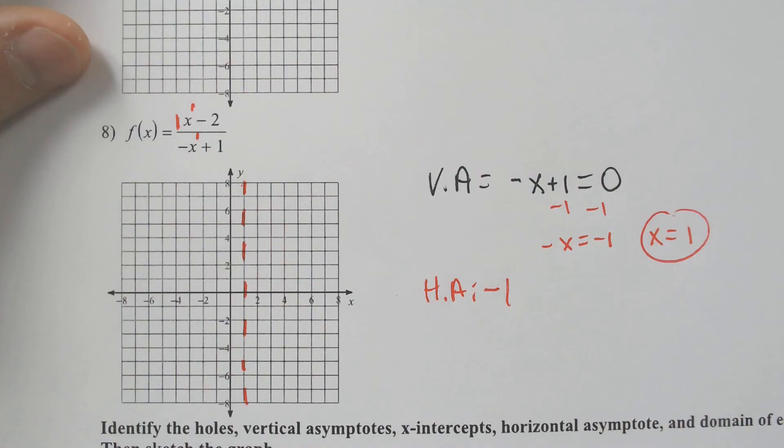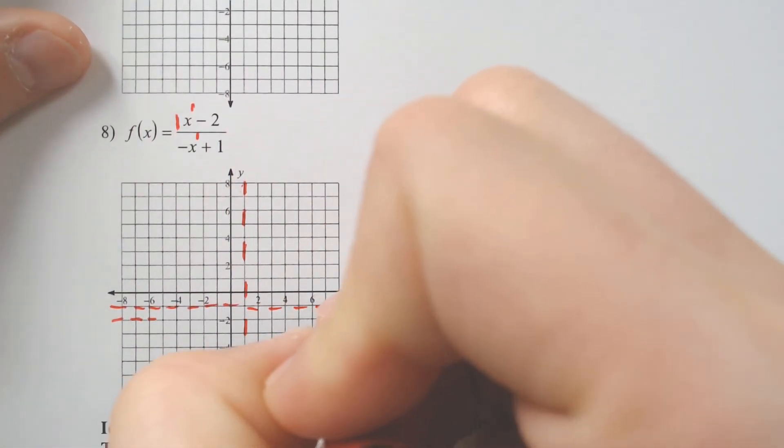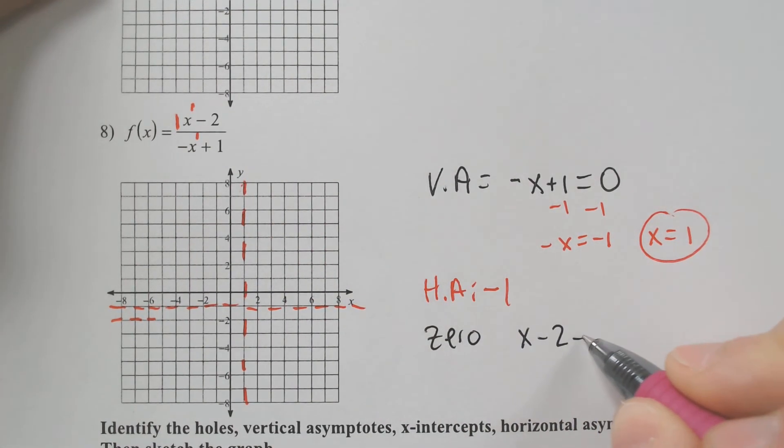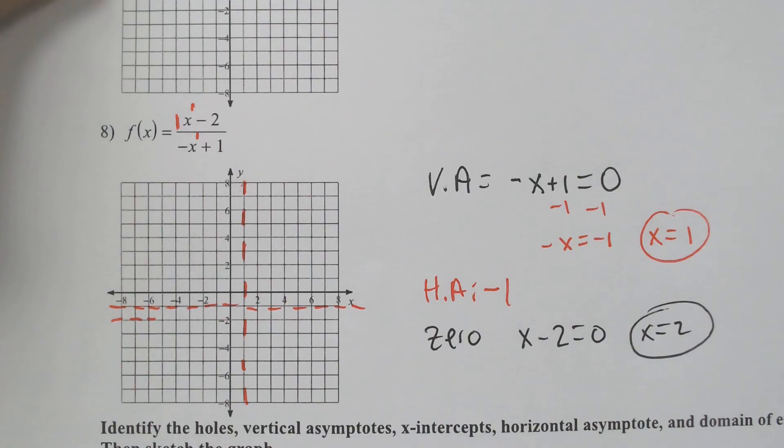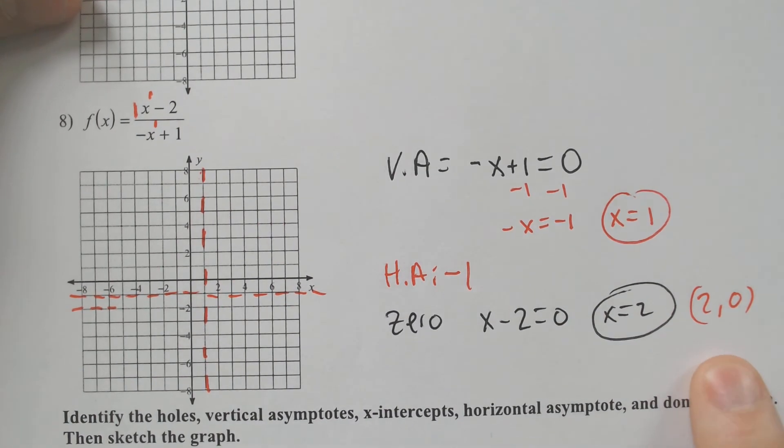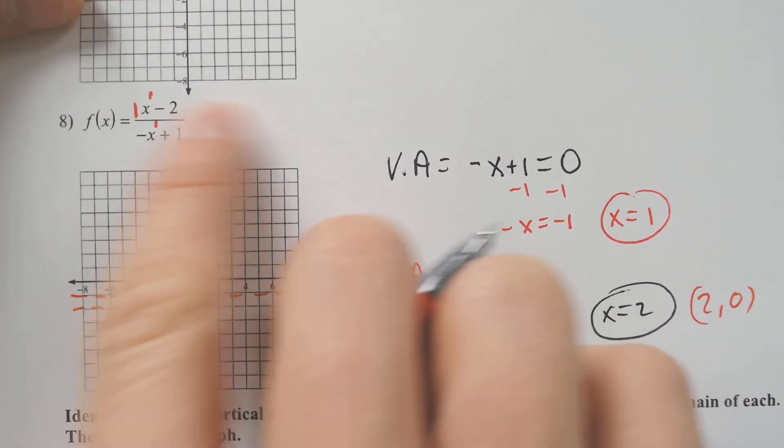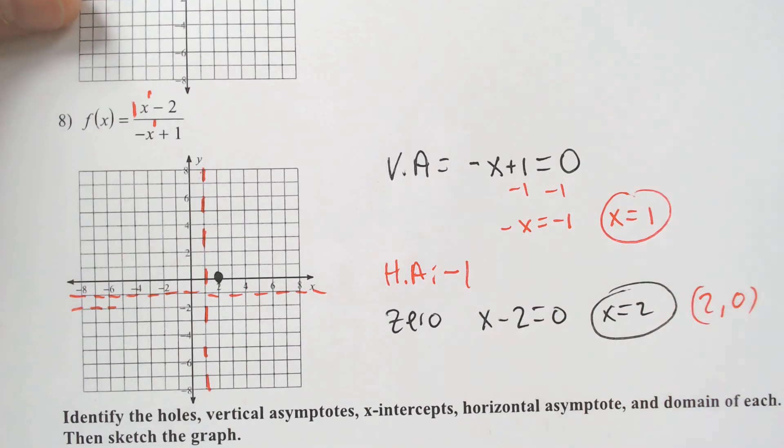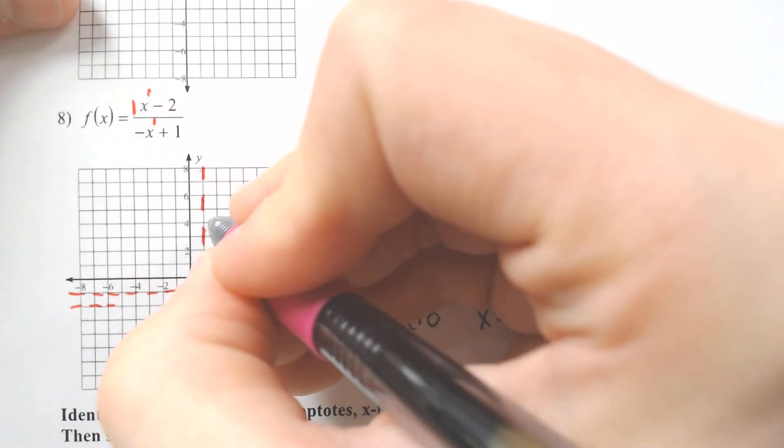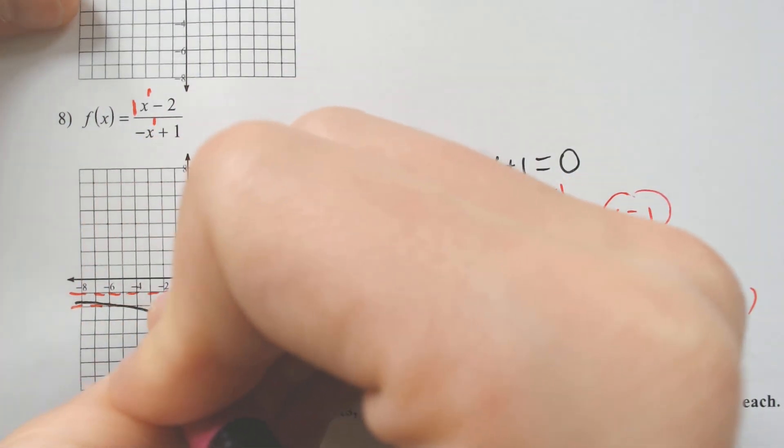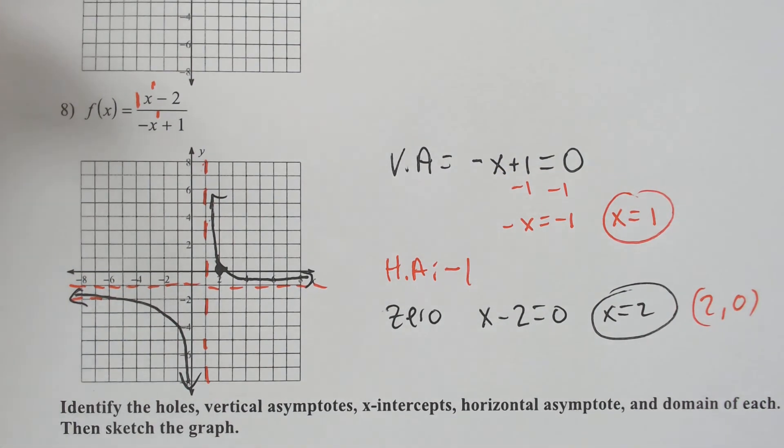So, if I wanted to find the zero or the x-intercept, I would set the top equal to zero. If I set x minus 2 equal to zero, I'd get 2, which can serve as our extra point. If I were to plug in 2, I would have 2 minus zero, which is zero divided by anything, ends up being zero. So, that tells me that this point 2 is the extra point I needed, and it conveniently is the x-intercept. It's not the only point I could have plugged in, but it's kind of an important one, so I just chose it. And there we have our graph.